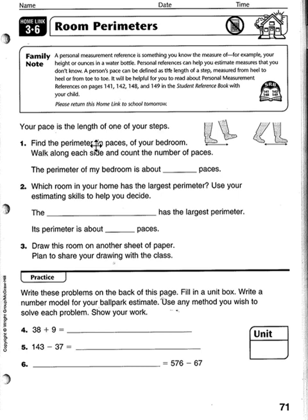Number one: find the perimeter in paces of your bedroom. Walk along each side and count the number of paces. The perimeter of your bedroom is about how many paces — in this portion, they put how many paces they had around their room.